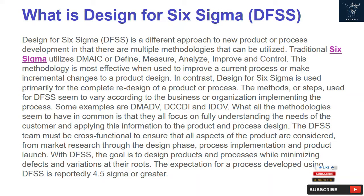What is Design for Six Sigma DFSS? Design for Six Sigma DFSS is a different approach to new product or process development in that there are multiple methodologies that can be utilized. Traditional Six Sigma utilizes DMAIC — Define, Measure, Analyze, Improve and Control. This methodology is most effective when used to improve a current process or make incremental changes to product design. In contrast, Design for Six Sigma is used primarily for the complete redesign of a product or process.